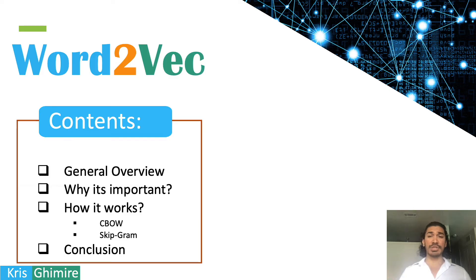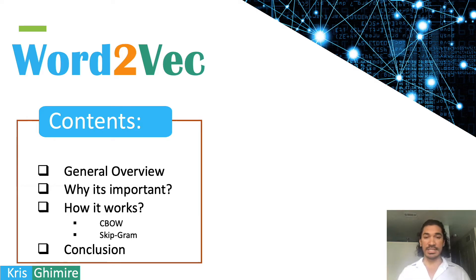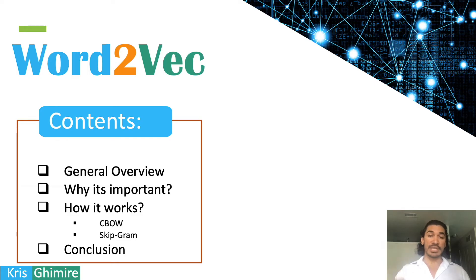In natural language processing, we want the computer to understand text like we humans do. But for that to happen, we need to translate the word or language in a way that the computer can understand, which is a numeric representation. So we're going to achieve that through a procedure called word embedding, which I will explain in more detail in these videos.